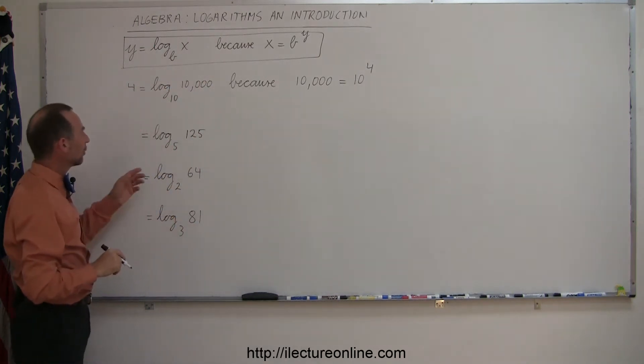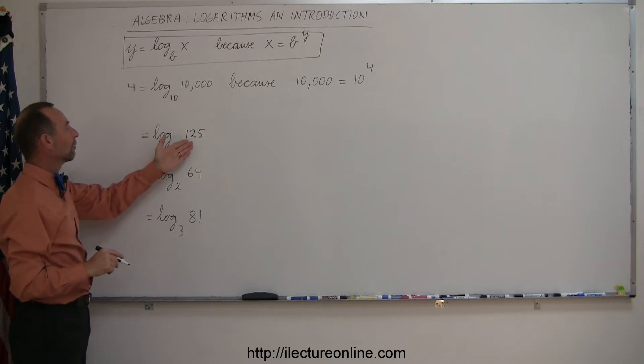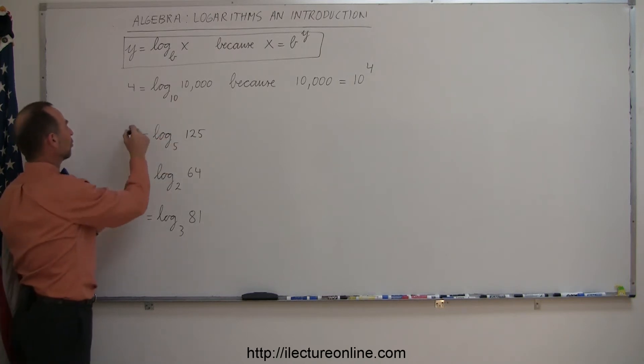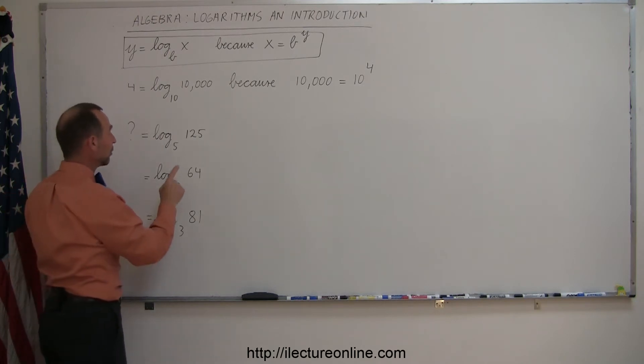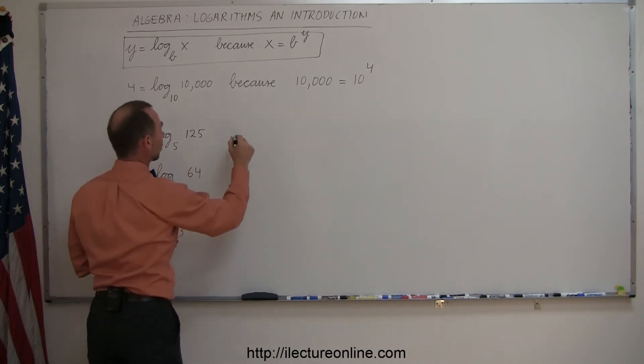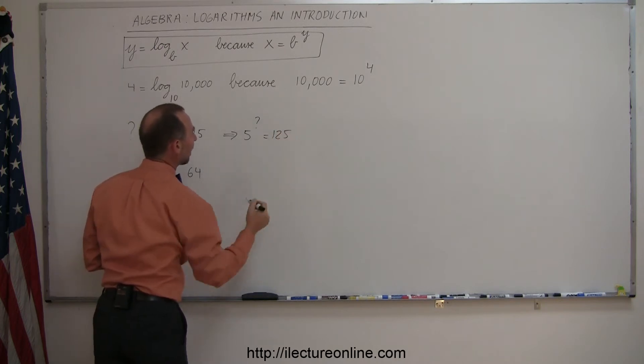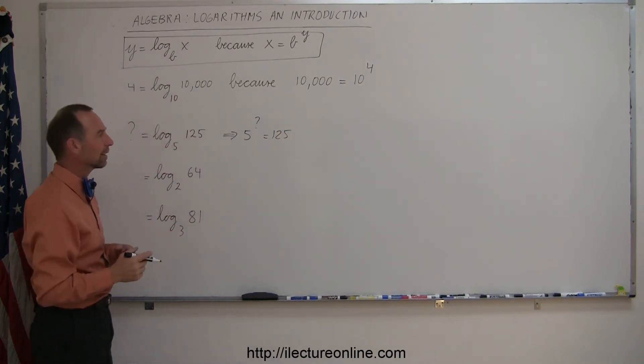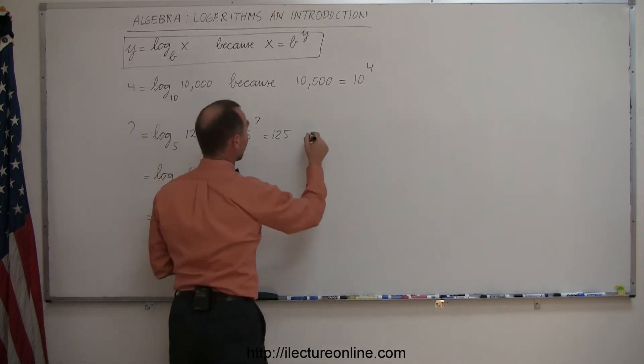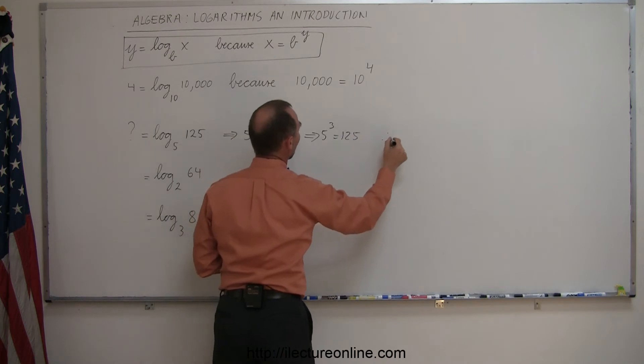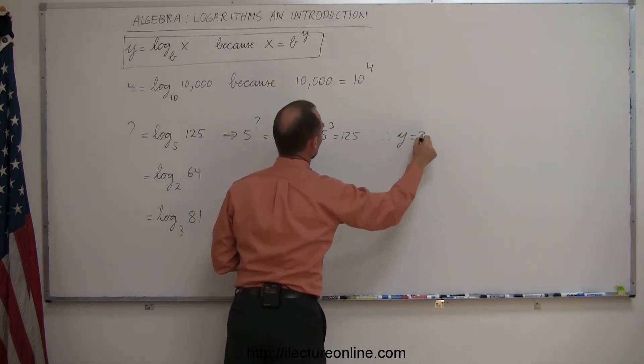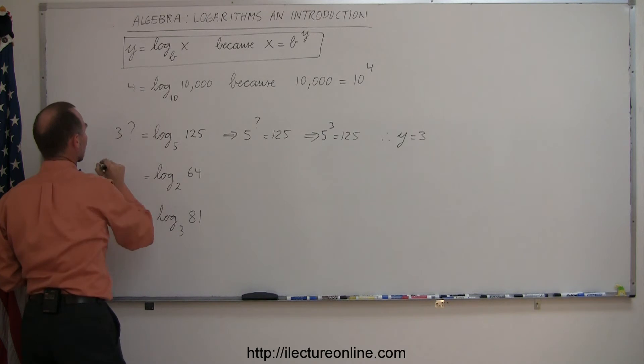As an example, here we have log base 5 of 125. So the question is, what is that equal to? What is y equal to? In other words, we're looking for a value that if we raise 5, the base, to that value we get 125. So the question becomes, 5 raised to what exponent equals 125? After a little bit of thinking, you can say that's equal to 3 because 5 to the 3rd power equals 125. So therefore, y is equal to 3.